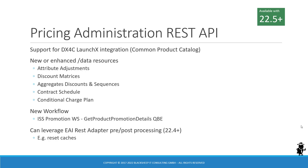The Bookshelf also informs us there is a new workflow to get product promotion details by query by example. Pricing administration changes in Siebel often require clearing several caches, which can leverage the pre- and post-processing feature that was introduced one release ago in 22.4, as described in the Bookshelf.